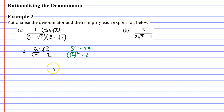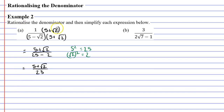To reiterate: we had the difference of two squares, so we simply squared our two terms, giving us 25 and 2, and then we subtract them. We get a nice whole number for our denominator: 25 minus 2 is 23. So our answer is (5 plus root 2) over 23. We're also told to simplify, but for question A there is no way to simplify this. So we'll now move on to question B.